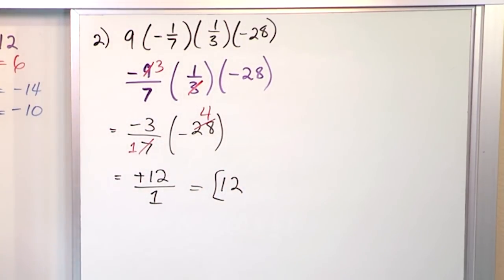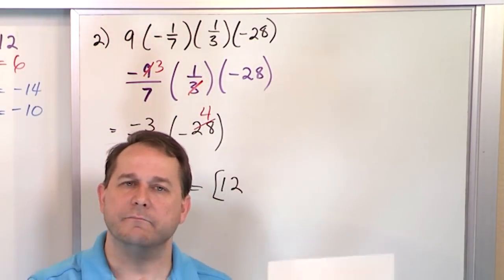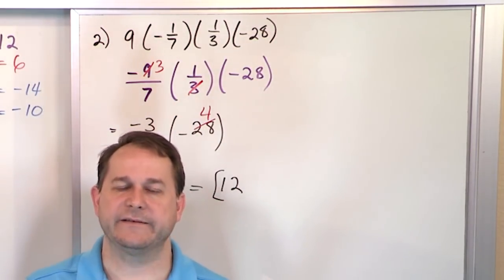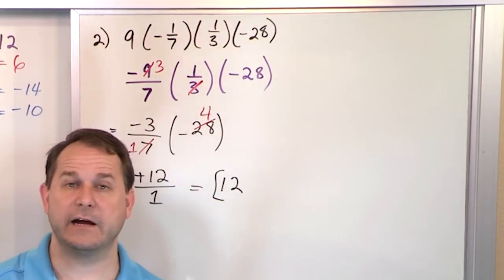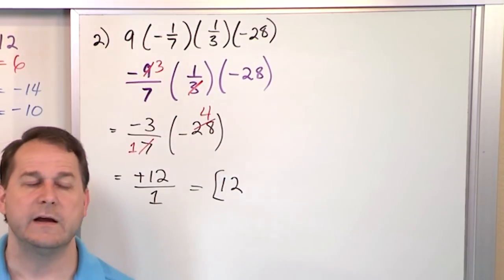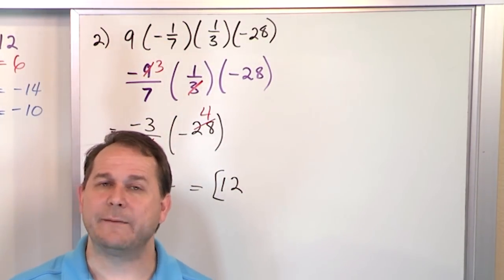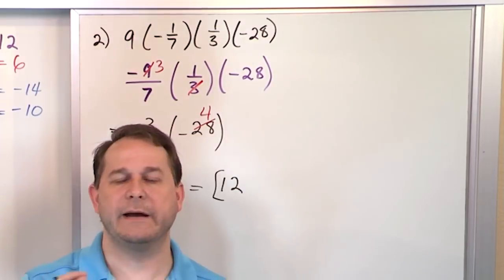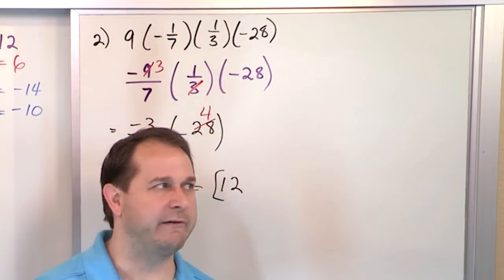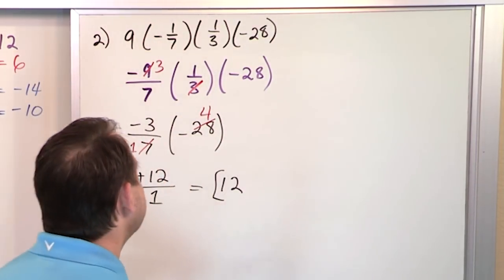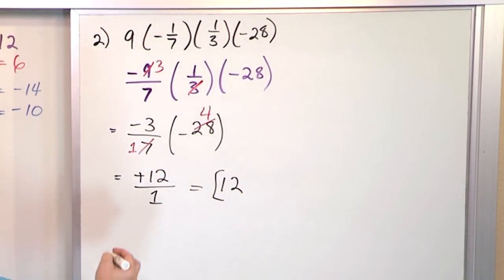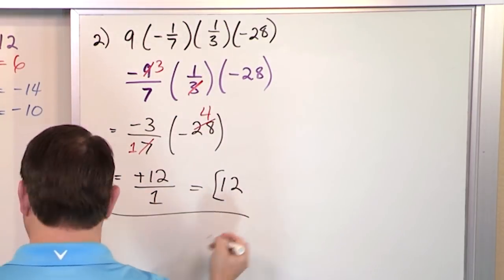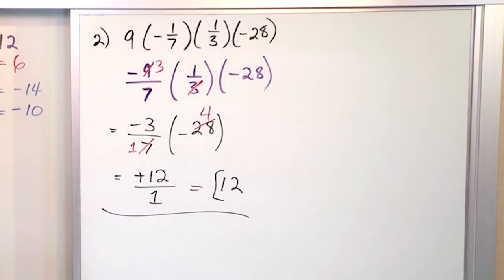That's the final answer, positive 12. We're just getting practice multiplying things, keeping track of the signs — negative times negative is positive and so on. At the same time, we're getting practice with canceling terms on top and bottom of fractions. Later we'll get into variables, but all of the multiplication rules for negative and positive numbers remain the same.